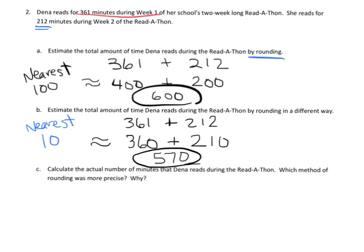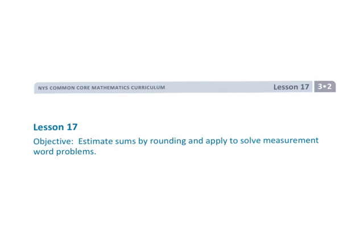So the rounding to the nearest 100 had a greater error, I guess, is the way to think of it. And so that's our foray into rounding to estimate and then comparing our estimations with the actual answer. And that is grade 3, module 2, lesson 17, estimating by rounding and then adding and comparing our estimations with the actual answer.